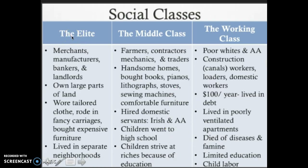The elite were merchants, manufacturers, bankers, and landlords. They usually owned large tracts of land which they rented out. They wore tailored clothing, rode in fancy carriages, bought expensive furniture, and some started to live in separate neighborhoods. Before industrialization it was difficult to distinguish people by economic status because most people ate and wore similar items, but the Industrial Revolution created social classes and challenged Republicanism because now people were no longer economically equal — there was a structure of who was on top and who was at the bottom.